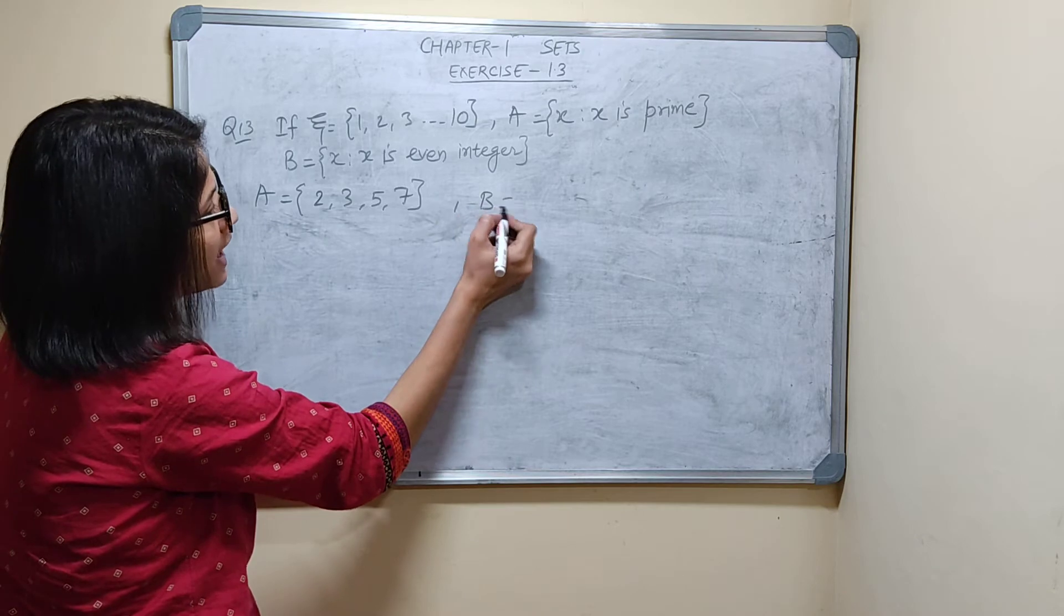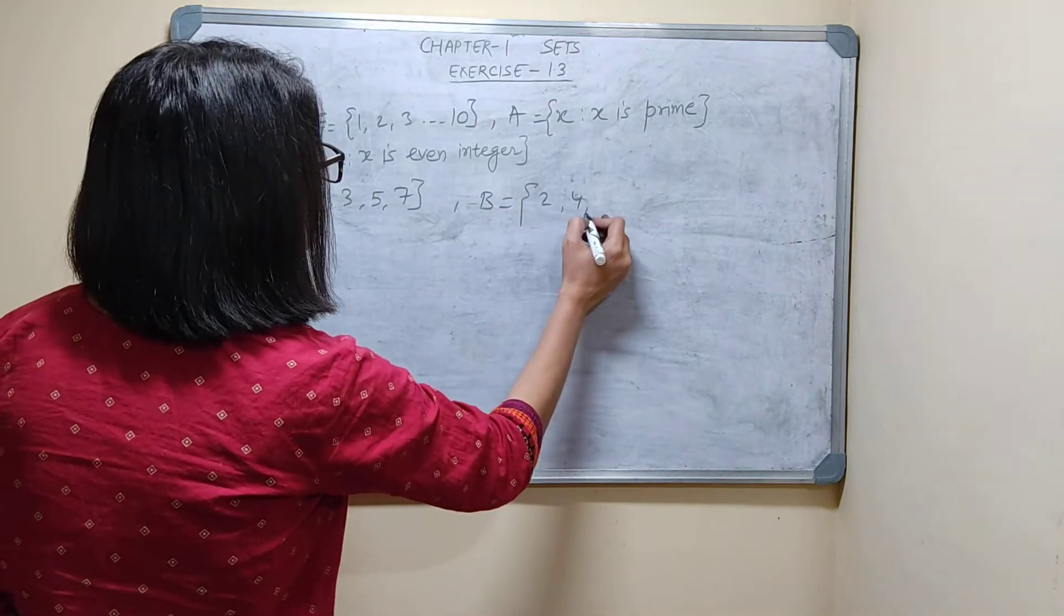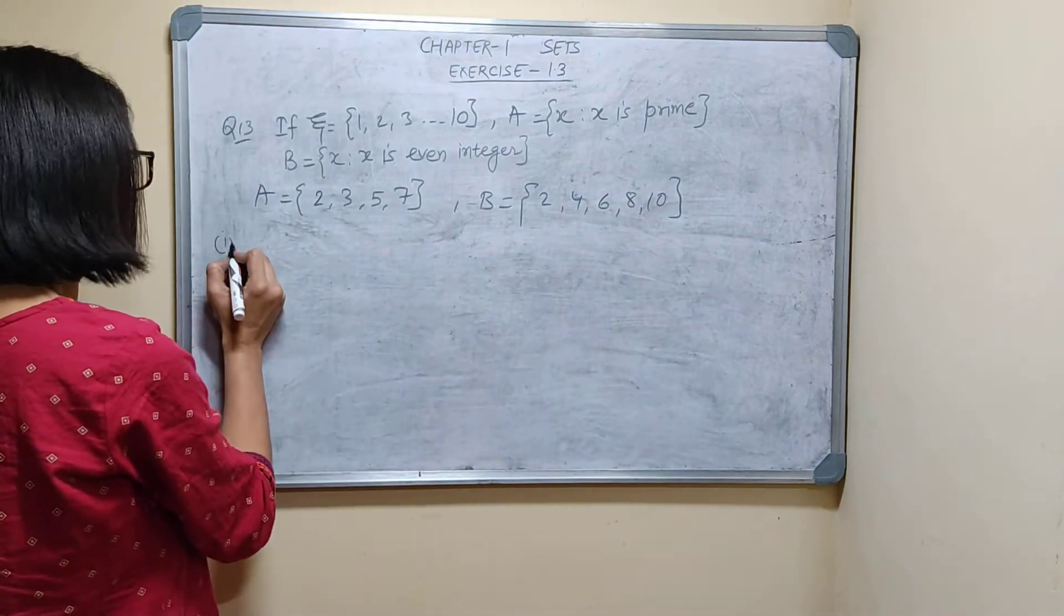And B is equal to what? x is even integer. So from this universal set only I have to write 2, 4, 6, 8, and 10. Now you have to find 2 things.